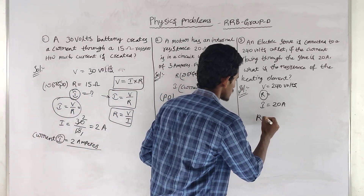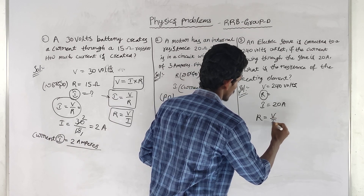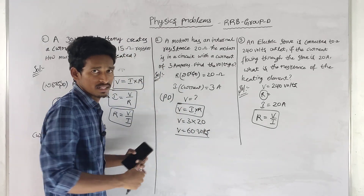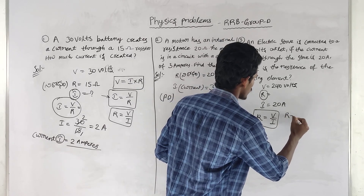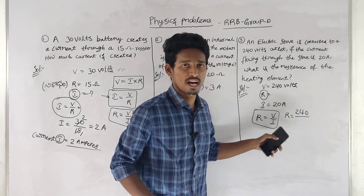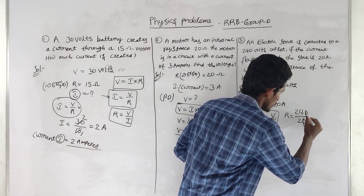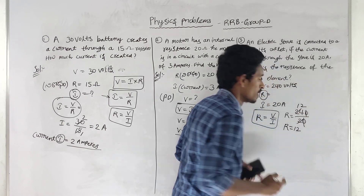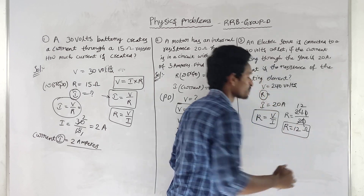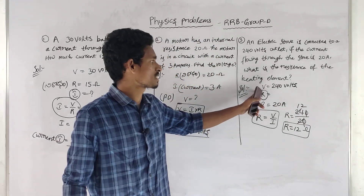We have V and I. The current I is equal to 20 amperes. Using R is equal to V by I, we cancel and get R is equal to 12 ohms. The resistance is 12 ohms. Units: resistance is ohms, current is amperes, voltage is potential difference in volts.